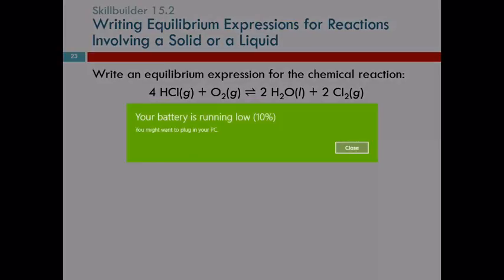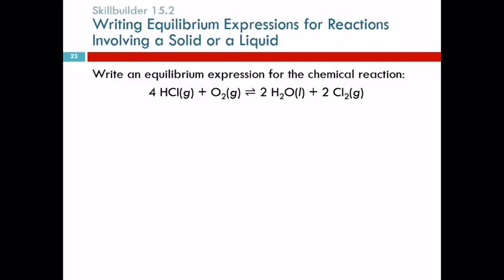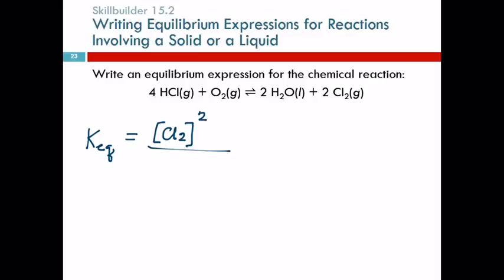Let's do an example — write an equilibrium expression for this reaction. So KEQ: we're going to take products over reactants. The first product is H₂O liquid — its concentration doesn't change, so we don't include it in the equilibrium expression. Then we have Cl₂, which is a gas, so its concentration can change. We raise Cl₂ to the 2nd power because the coefficient is 2. Then we divide by the reactants — both are gases, so we include them. HCl has a coefficient of 4, so it's raised to the 4th power. Oxygen has a coefficient of 1, so it stays to the 1st power, which we don't need to write.